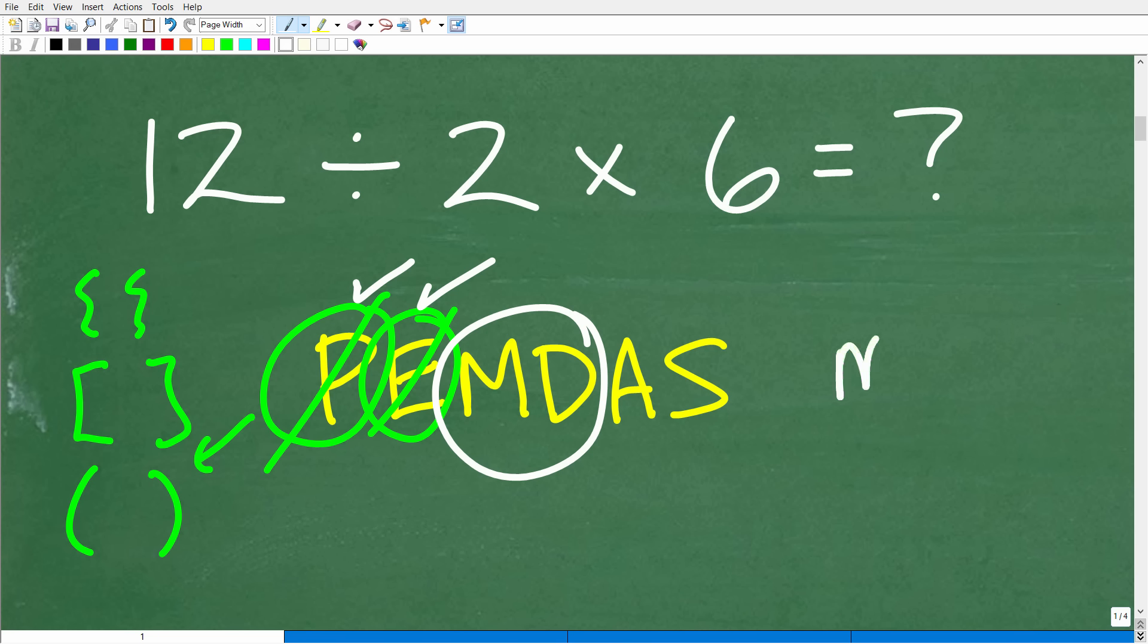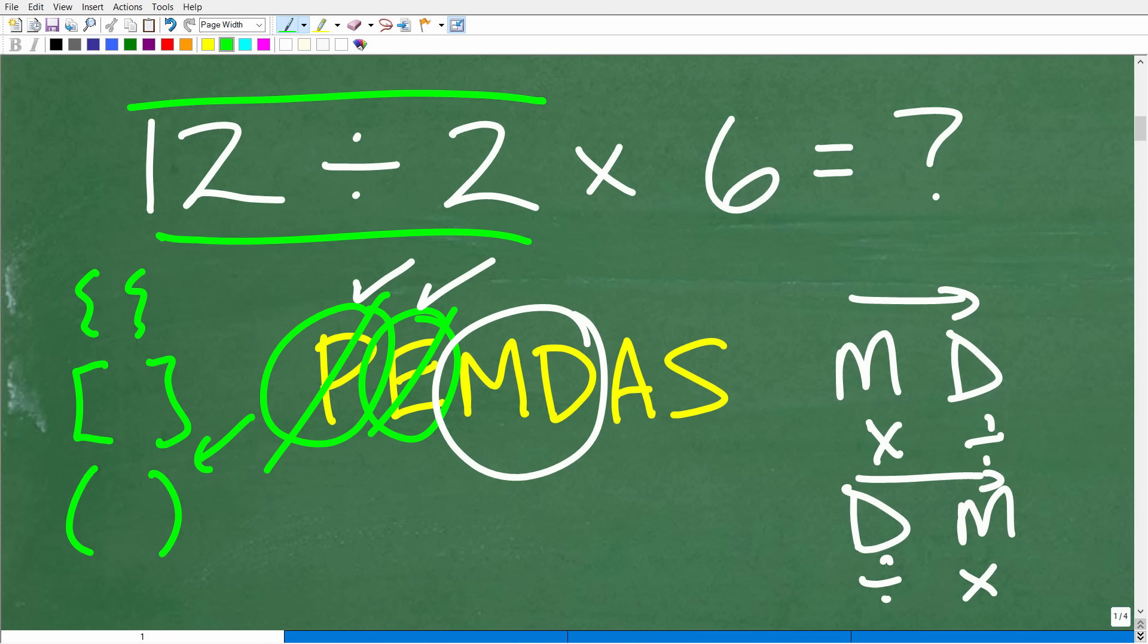In other words, if I have multiplication, then division, I'm going to do it this way because I see multiplication first from left to right. But if I have division, then multiplication, I'm going to do it this way because I see division first from left to right. And of course, this is our situation. I see division first from left to right. So this is why we're going to take this step first.